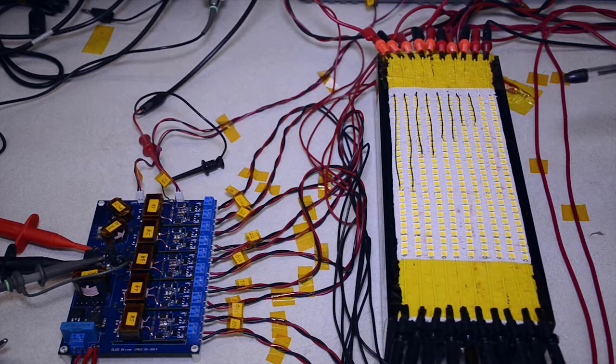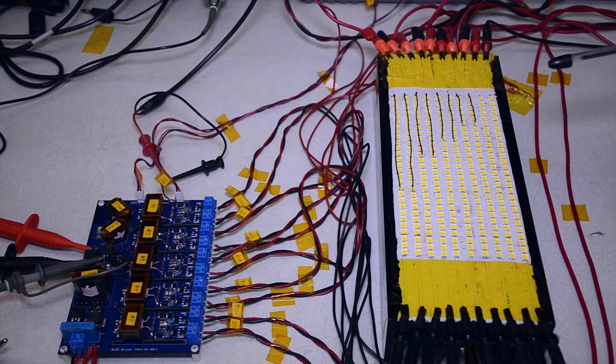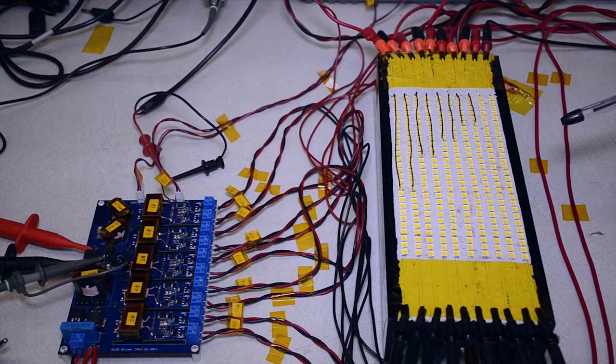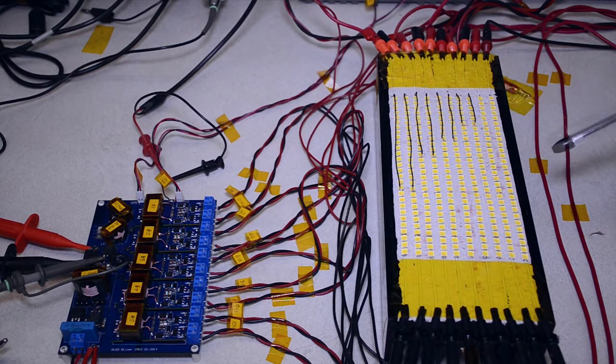Now we change to unbalanced load condition. There are 10 LED strings. The LED number of each string varies from 10 to 28.